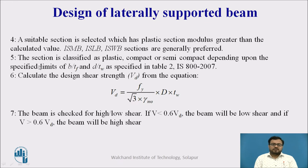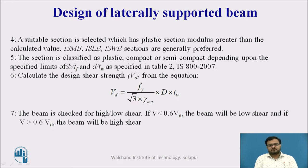We will then classify the section — whether it is a plastic section, compact section, semi-compact section, or slender section — as per Table 2 of IS 800-2007. For that, we check two criteria: B/TF (width-to-flange thickness ratio) and D/TW (depth-to-web thickness ratio).